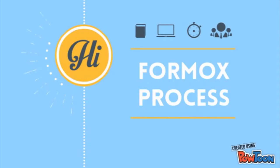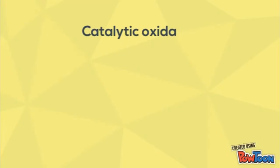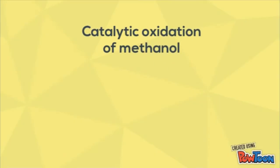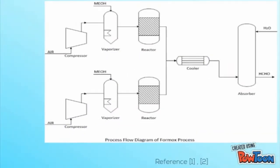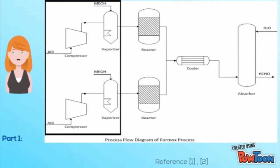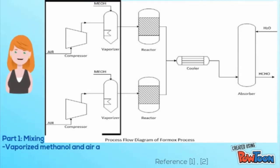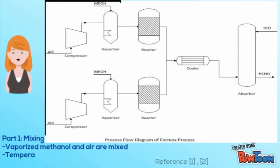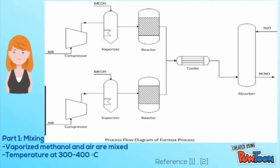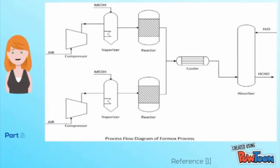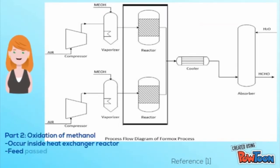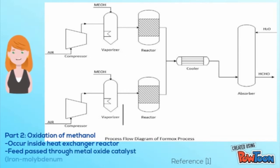The Formox process is a catalytic oxidation of methanol. There are three important parts in the process flow. Part one is mixing: the vaporized methanol and air are mixed at a temperature of 300 to 400 degrees Celsius.